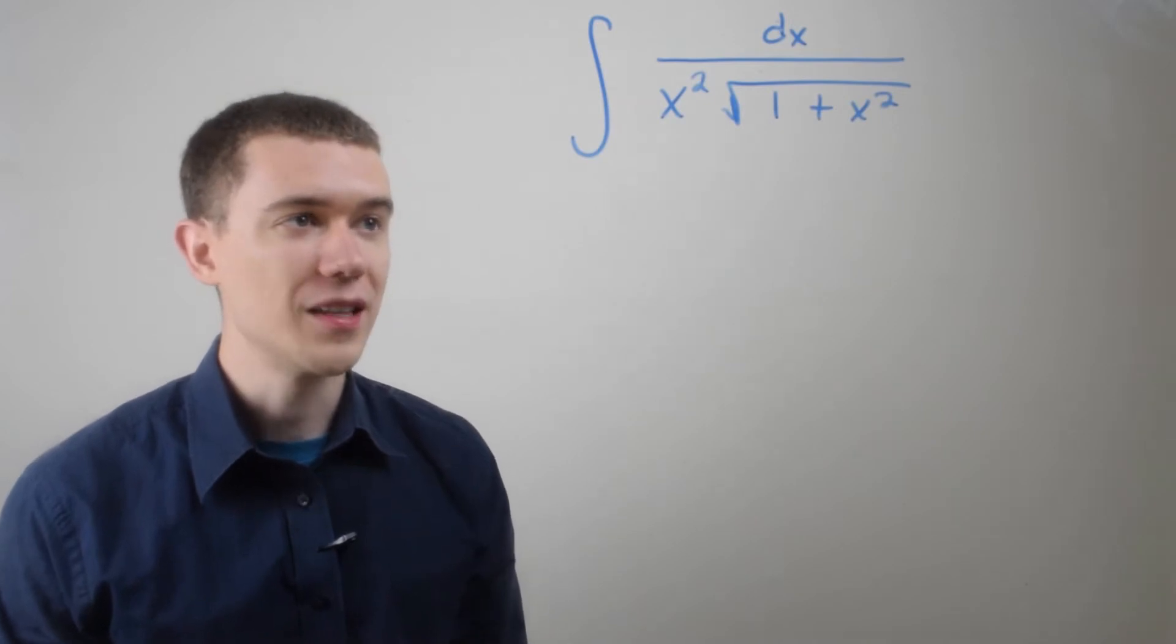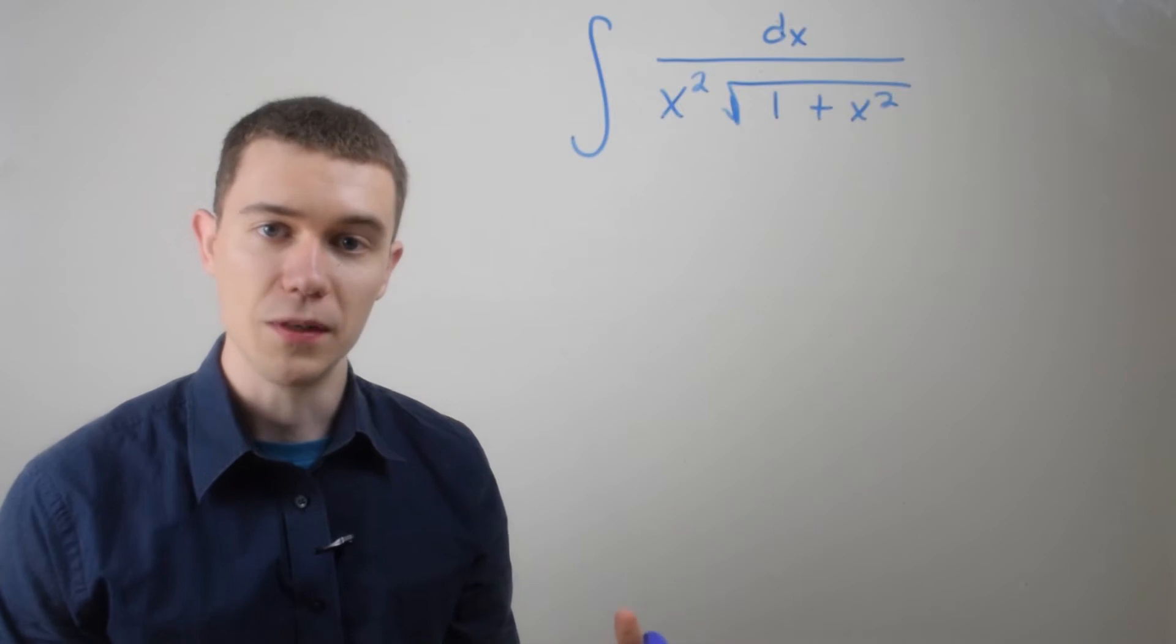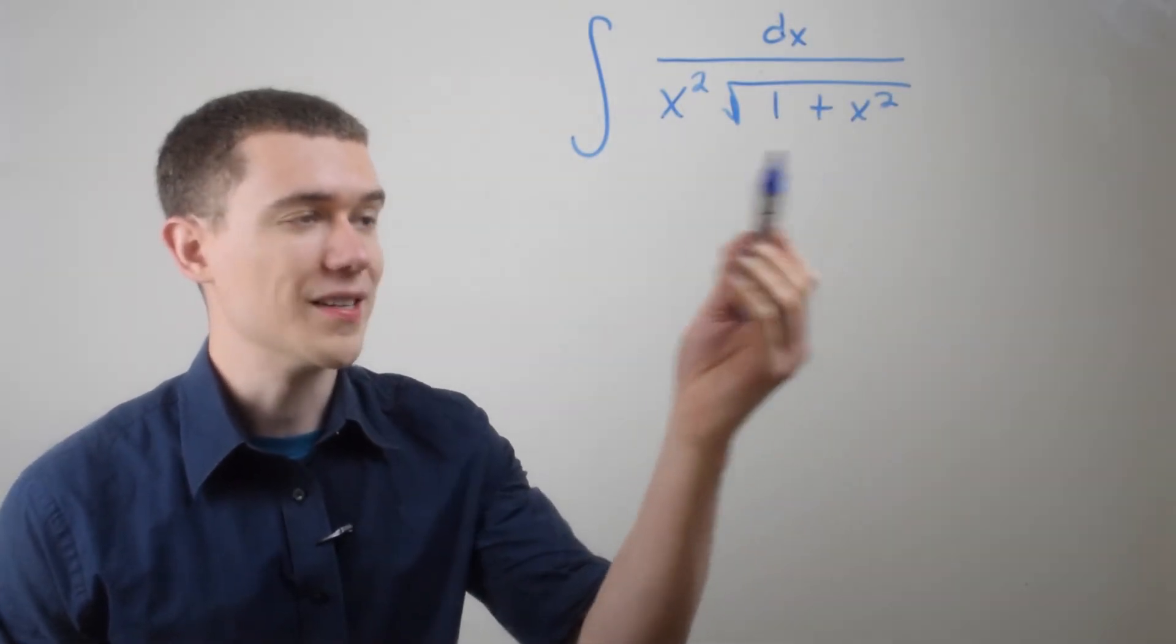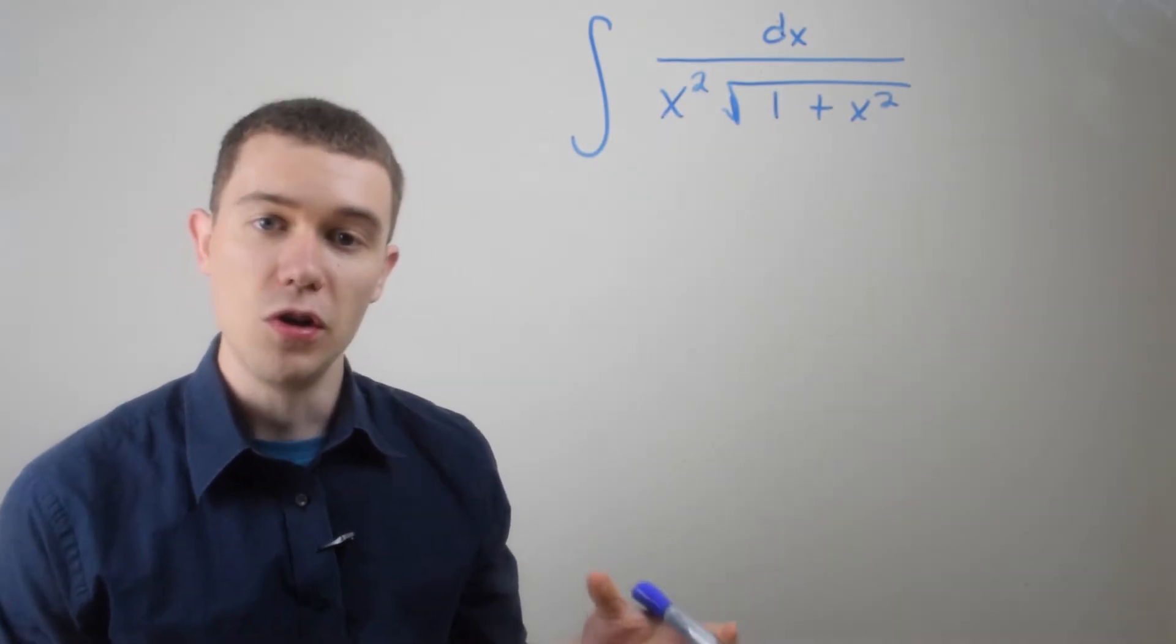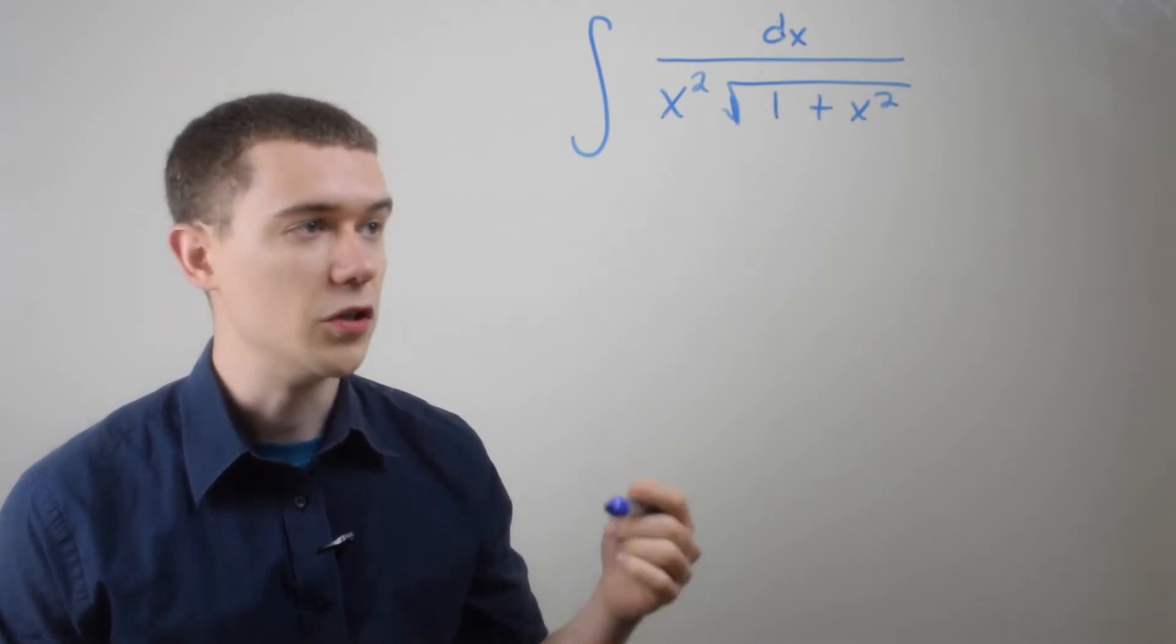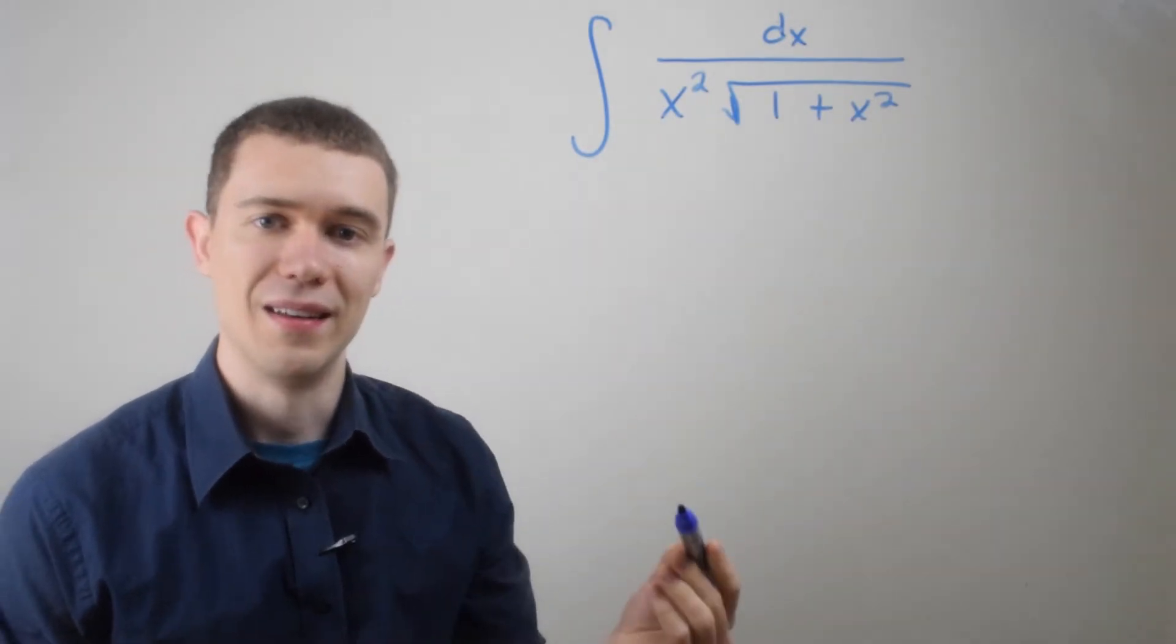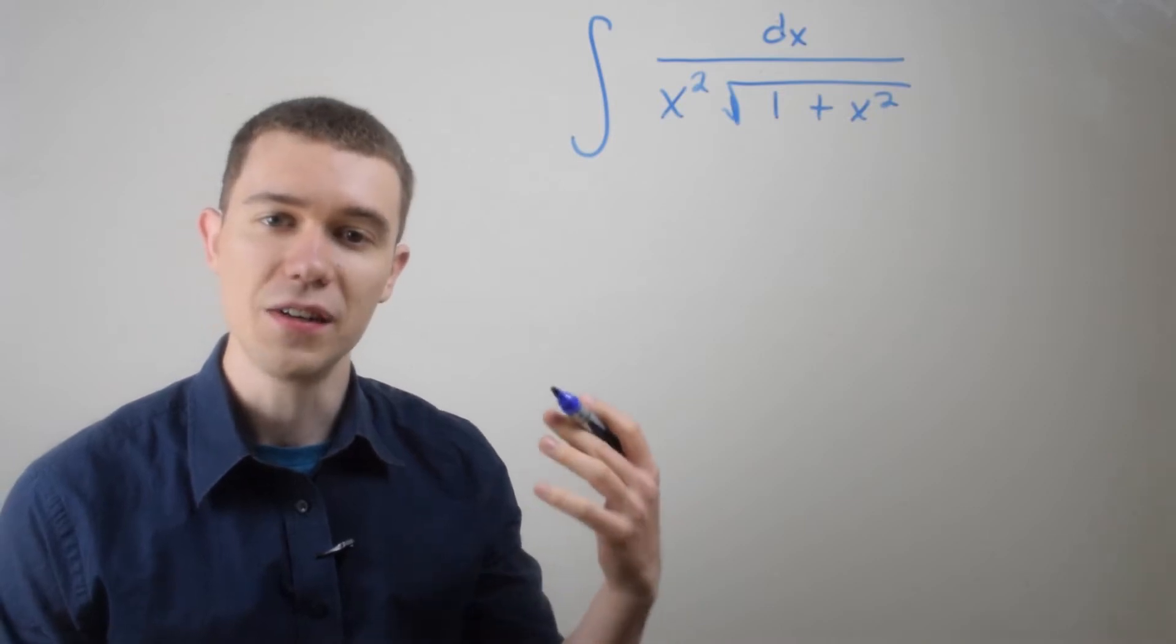Now, if you first look at this, you might be tempted to just do a regular u substitution, and say let u be 1 plus x squared. But let's think about that for a second. If you let u be 1 plus x squared, that means du would be 2x dx. And we don't have a 2x left in the integrand to cancel out, so that's not going to cut it.